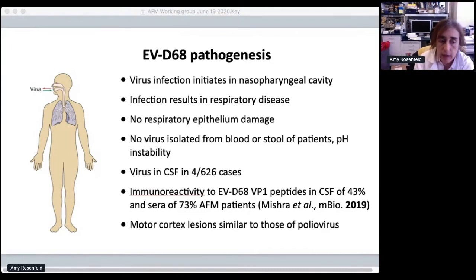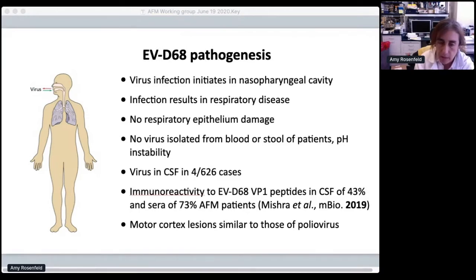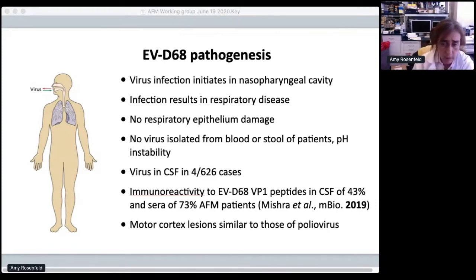The question of whether or not EV68 is neurotropic comes from the fact that it is very hard to find virus in the cerebrospinal fluid of AFM patients — only four out of our 626 cases have we been able to find virus. However, this is not unusual compared to polio, because we very rarely were able to isolate infectious polio from the CSF either.